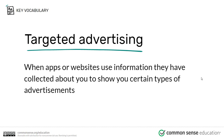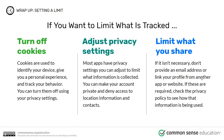Another key vocabulary term is targeted advertising — when apps or websites use valuable information they have collected about you to show you certain types of advertisements. For instance, if you go to a site like Amazon and you keep shopping for similar things, Amazon has a way of collecting that data and showing you similar products that you might want to buy in the future.